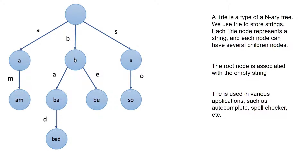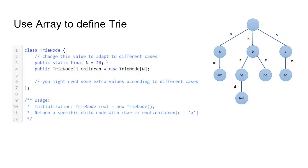Each node stores a character. If we were to find 'bad', we start at the root node and check if root has a child 'b'. It does, so we continue to see if 'b' has a child 'a'. We want to search for 'bad', so we check if 'a' has a child 'd'. It does, so we know that 'bad' exists and we can return the string as an autocomplete option. That's a perfect use case for this data structure.